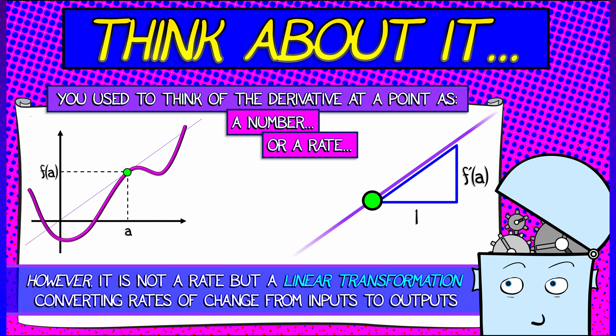In this case, the rate of change of the input and output being related by the formula dy equals f prime at a times dx. Look, that's a linear relationship. It's multiplication by a constant.